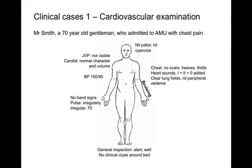Our first clinical case is the cardiovascular examination. I'll go through an example of how you can present having examined the patient, with those clinical findings on the screen. So this is Mr. Smith, a 70-year-old chap admitted to the acute medical unit with chest pain. On general inspection, he was alert and well at rest, with some marked bruising to the left forearm. There were no clinical clues around the bed suggestive of cardiovascular disease. There were no hand signs of cardiovascular disease, and the pulses were irregularly irregular at 70 beats per minute. Blood pressure was elevated at 150 over 95.